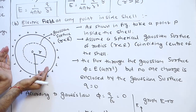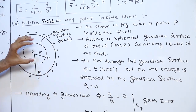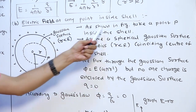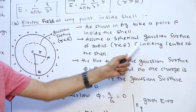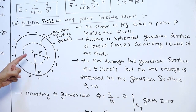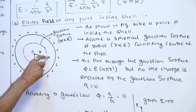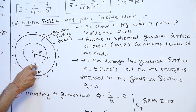Again, this is our original sphere with radius capital R and uniform surface charge density sigma. Point P lies inside the sphere. Imagine a Gaussian spherical surface of radius r less than capital R, concentric with the sphere — the centers of both spheres are the same. The flux through this Gaussian surface is phi equals E into 4 pi r squared, similar to the previous case.